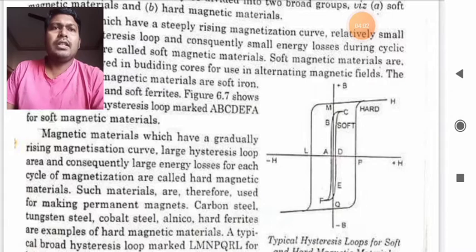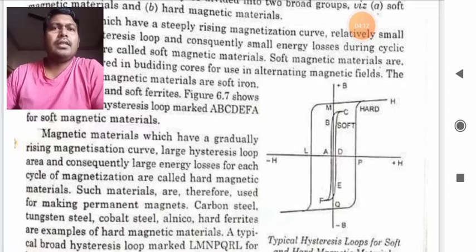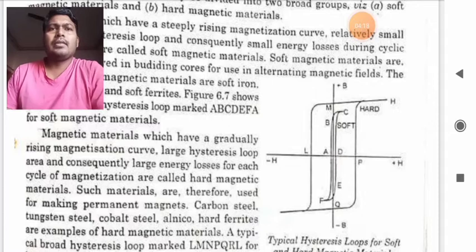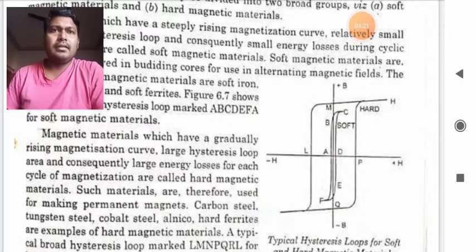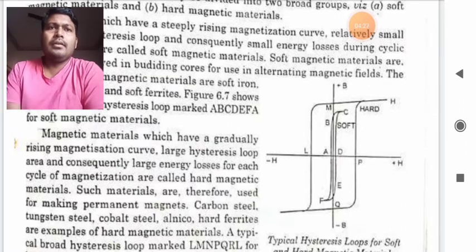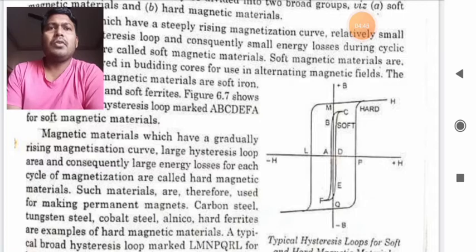Magnetic materials which have gradually rising magnetizing curve, large hysteresis loop area and consequently large energy losses for each cycle of magnetization are called hard magnetic materials. How to recognize that a material is made up of hard magnetic materials? If there is a gradual rising magnetizing curve having large hysteresis loop area and consequently large energy losses for each cycle of magnetization therefore such materials are used for permanent magnets.